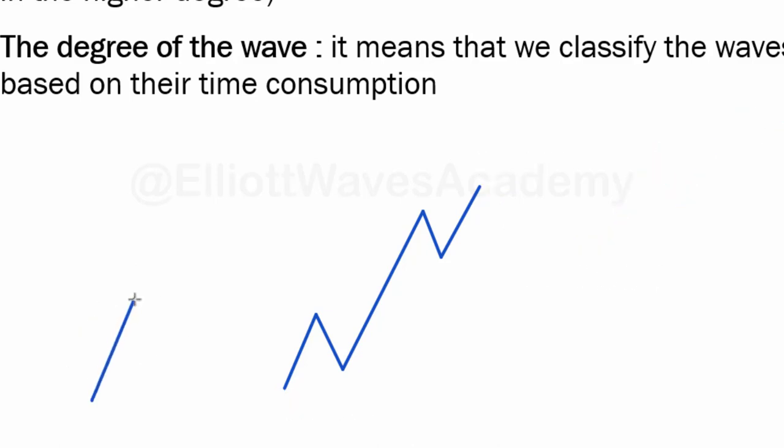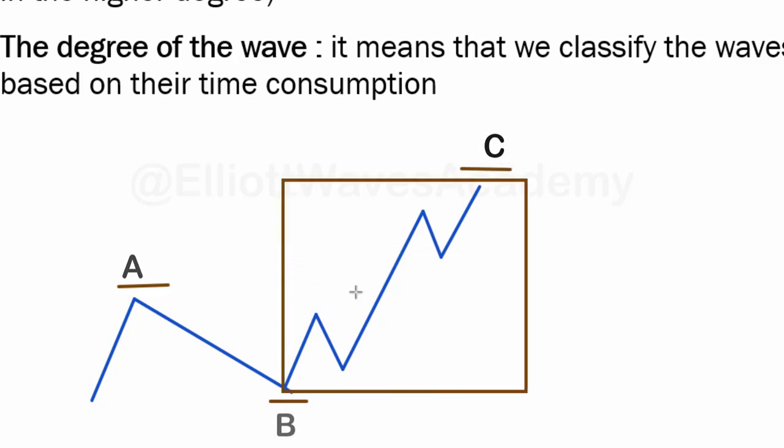And so on. In case we finished wave 3 here and made wave 4, it can be wave 5. If this is wave A and this is wave B from a zigzag, this can be wave C. So as you can see, as this wave has internal sub-waves, it can also be part of a wave in the higher degree. This is what we mean by wave degrees.